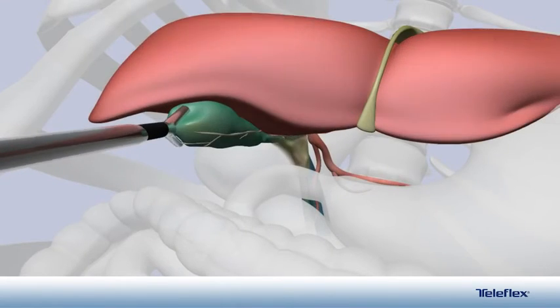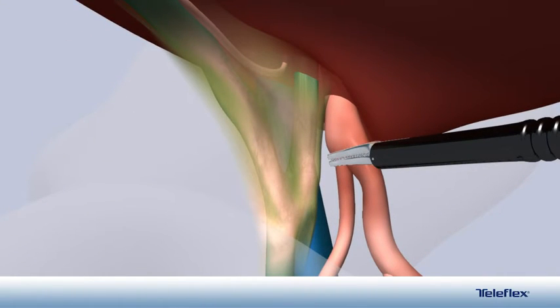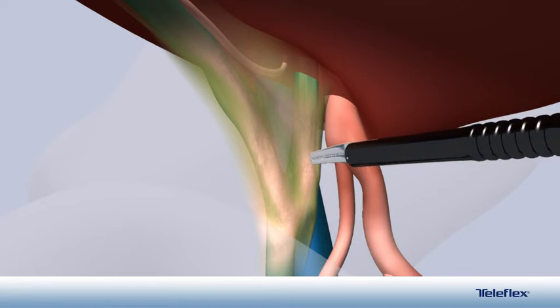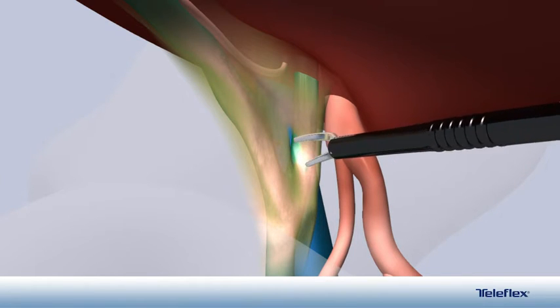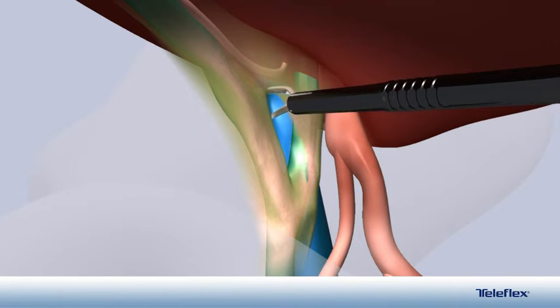Using pilling laparoscopic instruments, the triangle of Callot is exposed. Blunt dissection is used and the cystic duct and cystic artery are identified. The cystic duct is skeletonized using a Maryland dissector.